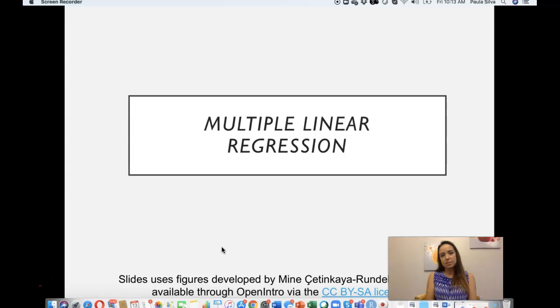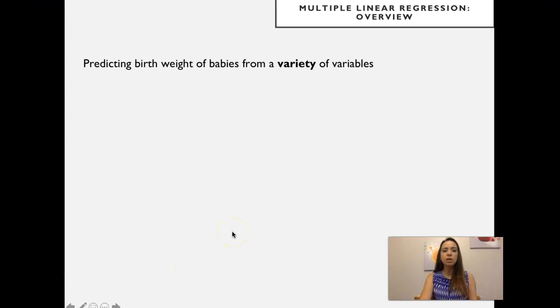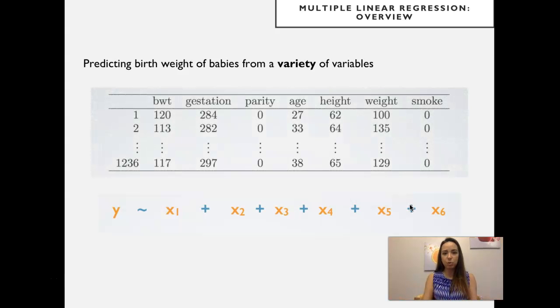Let's begin with our first example. Imagine you'd like to predict birth weight of babies from a variety of variables that you can measure during pregnancy. While last class we had only one explanatory variable and one response variable, now we'll extend to the case where you can have a number of explanatory variables. Here's one example where we have one response variable, birth weight, and one, two, three, four, five, six predictor variables.